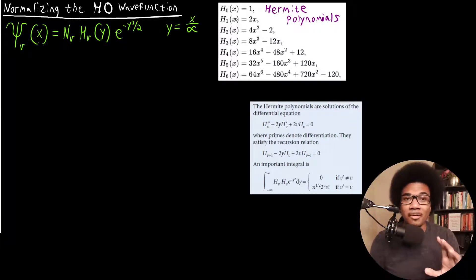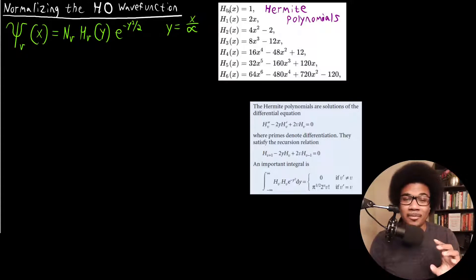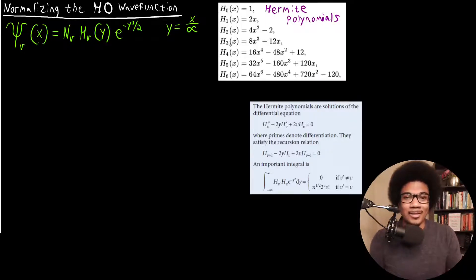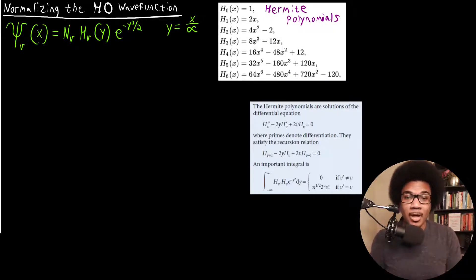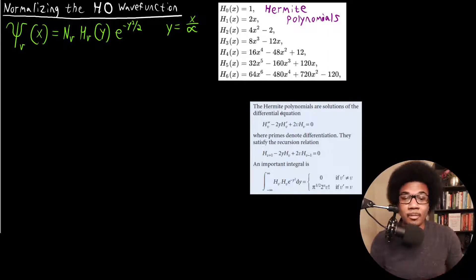There are many Hermite polynomials, but for all intents and purposes, at least for an introductory physical chemistry class, the first five or six should get you all the way to the end of the course. Anything higher, you're probably doing some advanced stuff with Hermite polynomials. Not only do you need to be aware of the form of the Hermite polynomials, but there are also some very crucial relationships for them that you need to be familiar with.